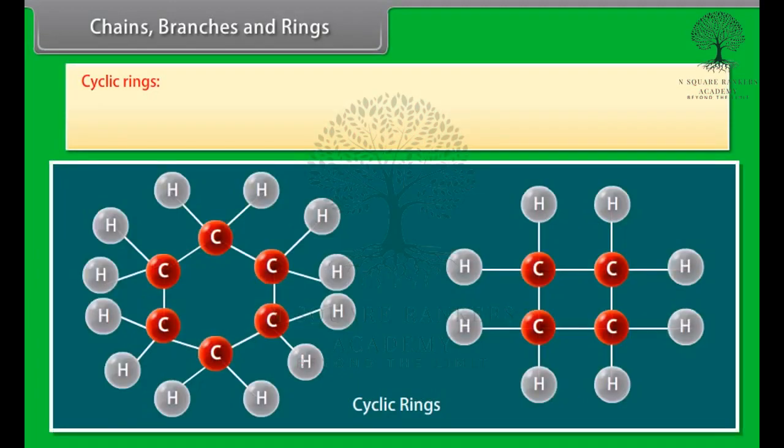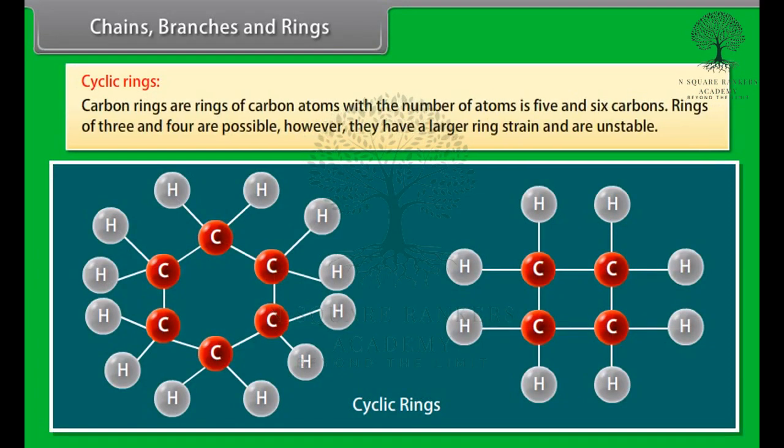Cyclic rings. Carbon rings are rings of carbon atoms. The number of atoms to form a ring is five and six carbons. Rings of three and four are possible. However, they have a larger ring strain and are unstable.